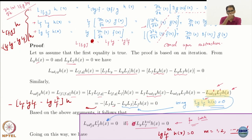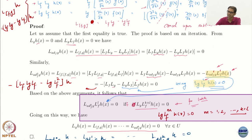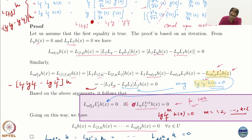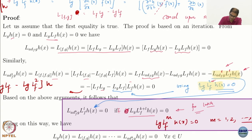Once I have this nice formula, this entire proof goes through very smoothly. Now if I want to do the second level: what is L_{ad_f² g} h? It is L_{[f, ad_f g]} h, which by the same formula equals Lf(L_{ad_f g} h) − L_{ad_f g}(Lf h).